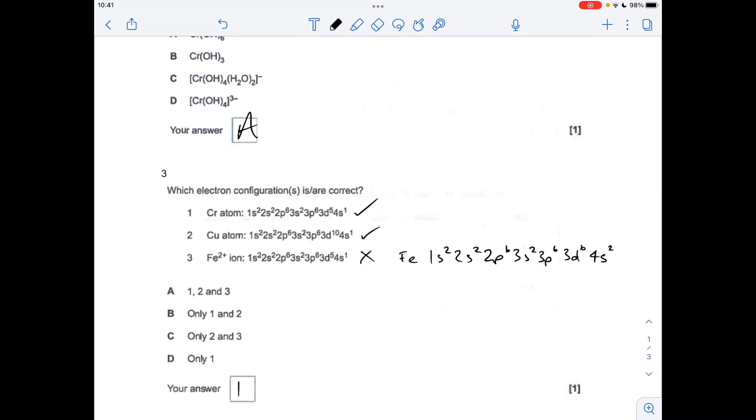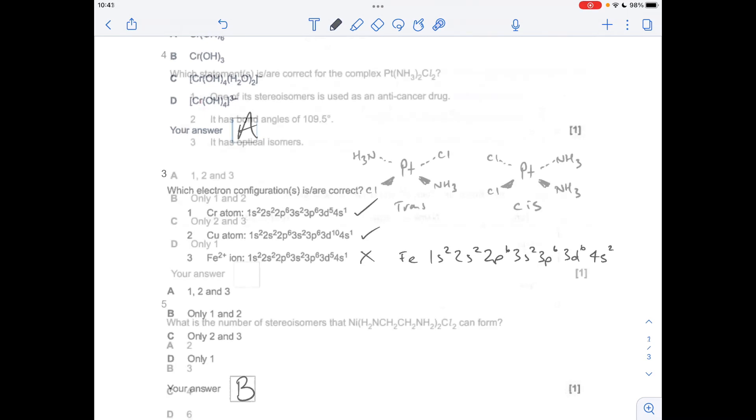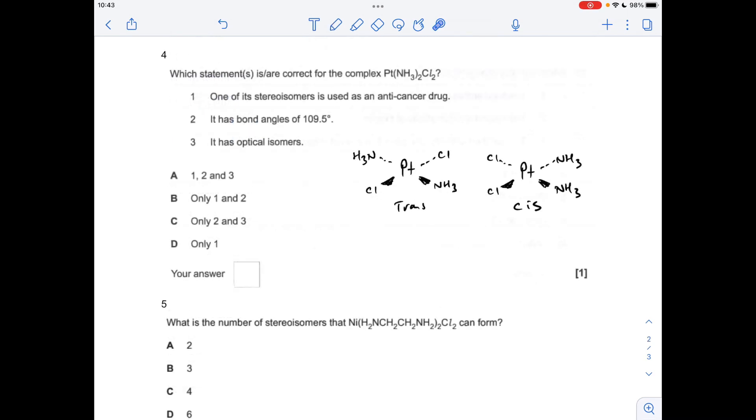Number four: which of these statements are correct about this complex of platinum? You'll notice I've drawn up the two isomers of the complex. We've got trans-platin where the chlorines or the ammonias are 180 degrees apart. The cis-platin is where these are 90 degrees apart—that's kind of given an answer away to one of the questions. Is one of the stereoisomers used as an anti-cancer drug? Yes, because it's the cis isomer. Are the bond angles 109.5 degrees? No, these aren't tetrahedral, they're square planar.